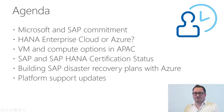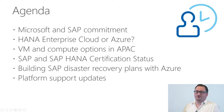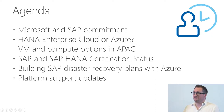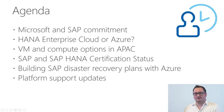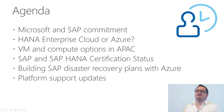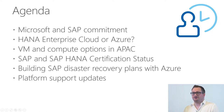We start with a recap on Microsoft and SAP commitment. We will talk about HANA Enterprise Cloud and Azure — do we have to choose? Then we talk about VM and compute options for running SAP on Azure, especially in APAC. Then a certification update on what can run in which conditions inside Azure cloud. Then disaster recovery plans with Azure, and the latest technology updates around running SAP on Azure on various Microsoft platform and third-party solutions.